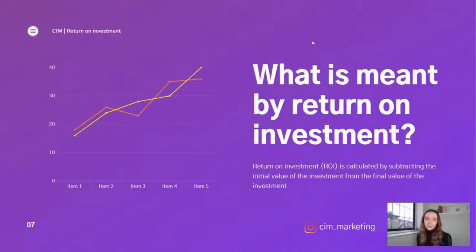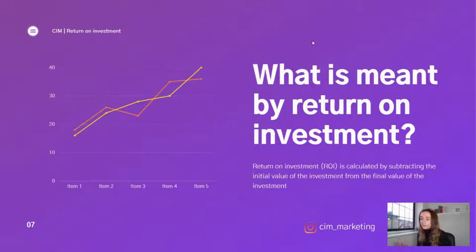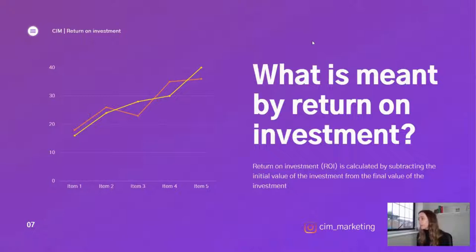Return on investment is calculated by subtracting the initial value — whatever you put into a campaign — versus what you're gaining back. So if you spent £100 on a campaign but made £200, you subtract £100 from £200 to figure out the overall return. Ultimately every business wants to make money, and that's what each campaign comes down to: the return on investment and how much value it's adding to the business.